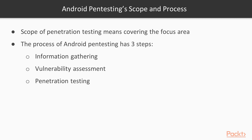First of all, information gathering. Information gathering about an Android machine is basically gathering information about the application — what kind of application it is, how it works. We need to understand this before performing penetration testing. This is called footprinting or information gathering, which is step one.